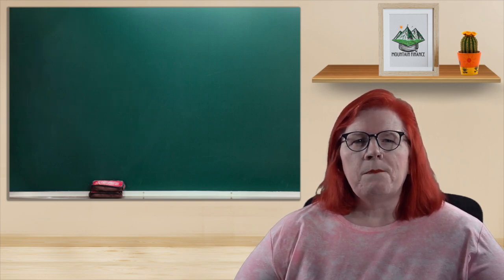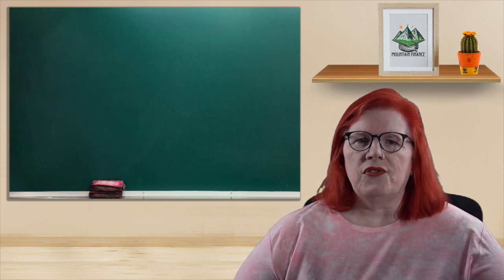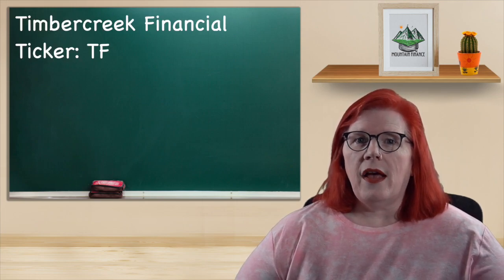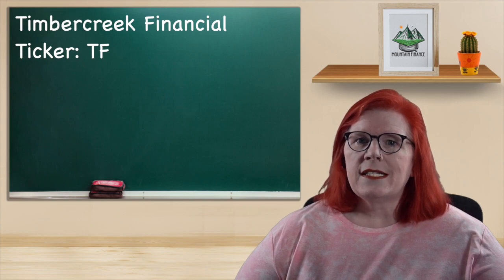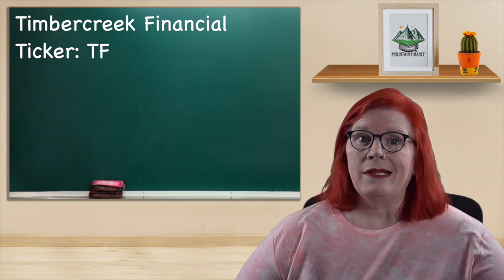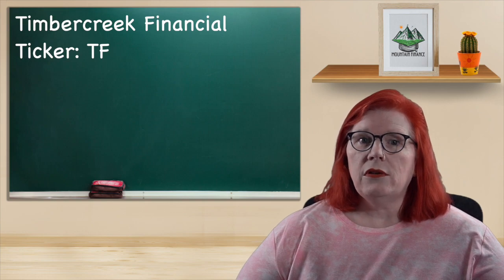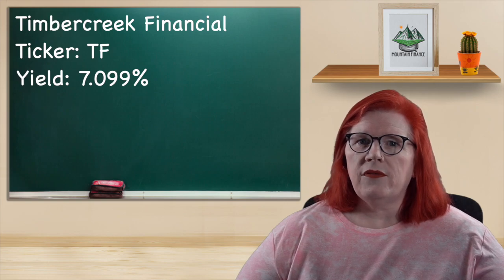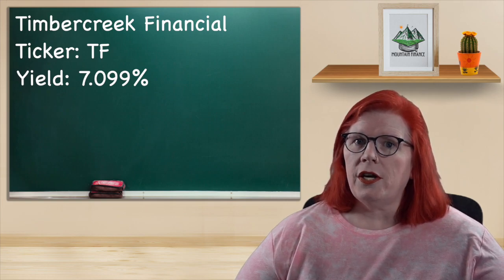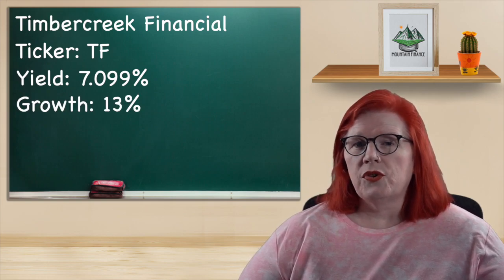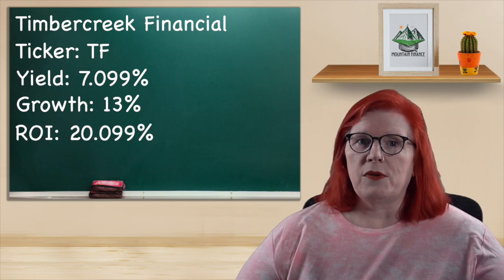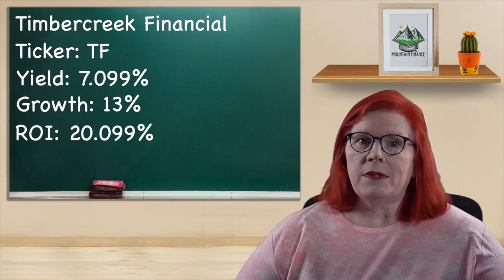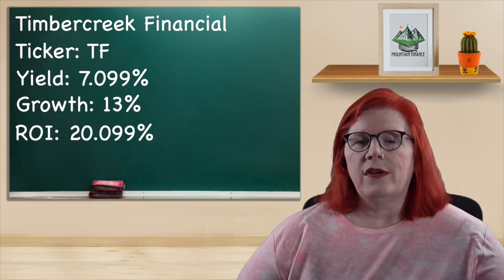For our next company, we are going to move into the financial sector and we will start with Timbercreek Financial. Their ticker is TF and they are a real estate lender specializing in commercial and residential real estate. Their dividend yield is a nice looking 7.099 percent in the form of a monthly dividend of 5.8 cents per share. Their growth for last year was 13 percent which gives them an ROI of 20 percent for the last year. They really are a nice easy investment to add to either a growth or dividend focused portfolio.